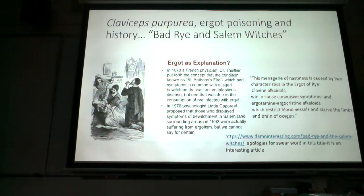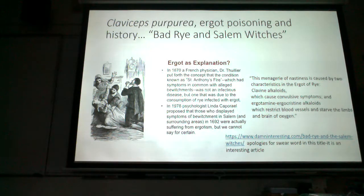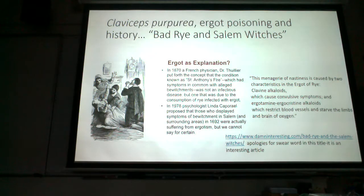Some historians think the Salem Witch Trials may have been connected to ergot poisoning. Back in the 1600s in Salem, teenage girls were accusing neighbors of being witches — which back then could get you hung or burned alive. A hypothesis is these young women were suffering from ergot poisoning and were hallucinating. It's a heartbreaking thought that people were falsely accused and killed because these women were hallucinating from ergotism.